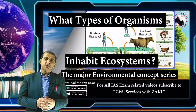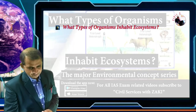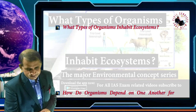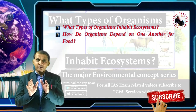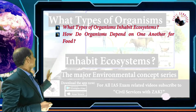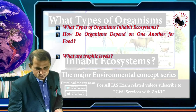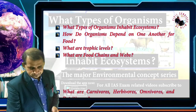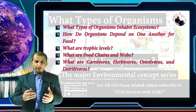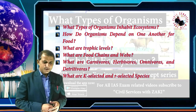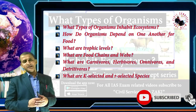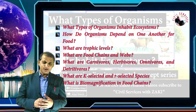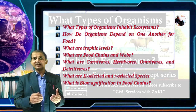In this video we will discuss: what types of organisms inhabit an ecosystem; how organisms depend on one another; what are trophic levels; what are food chains and food webs; what are carnivores, herbivores, omnivores, and detritivores; what are K-selected and R-selected species; and what is biomagnification in the food chain.